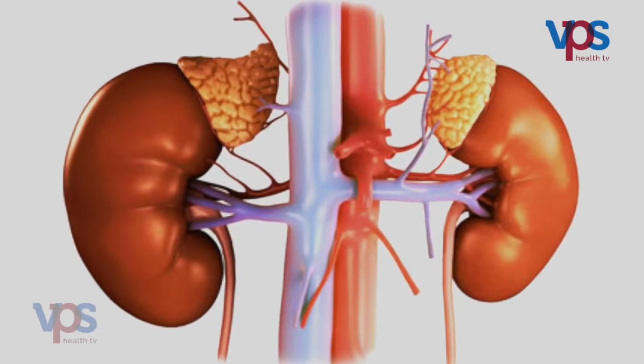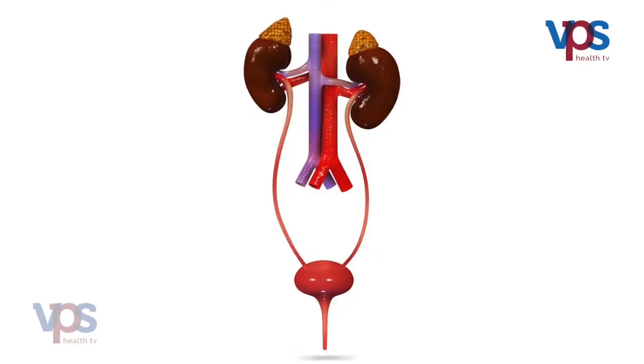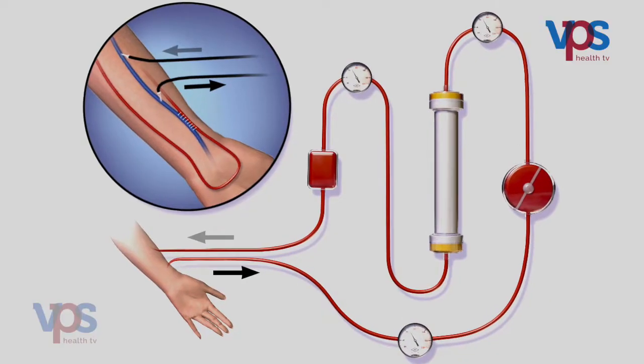The human body has two kidneys. The function of the kidneys is to excrete waste products — the nitrogenous waste products — maintain the water balance, produce two hormones: erythropoietin for hemoglobin synthesis and vitamin D for bone health, and also manage the acid balance of the body. When the function of both kidneys falls below 10%, that is the time when we think about dialysis.